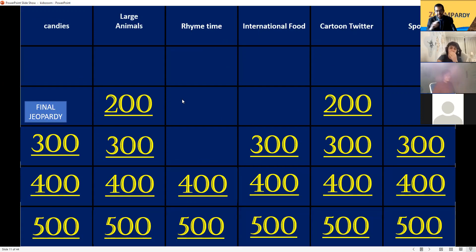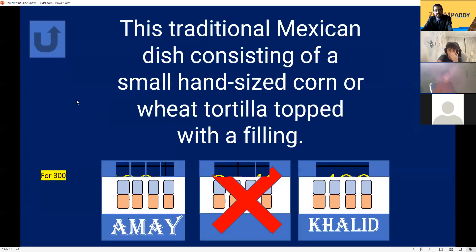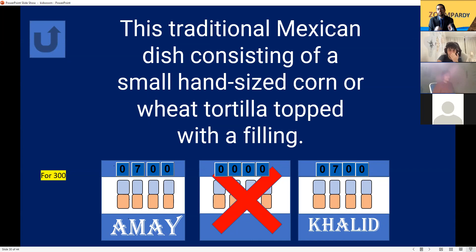International Food for 300. This traditional Mexican dish consists of small hand-size corn or wheat tortilla topped with fillings. Taco! Yes, taco for 300 points — you now have 1000 points.